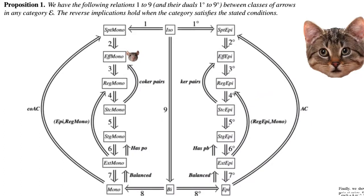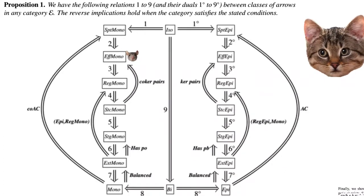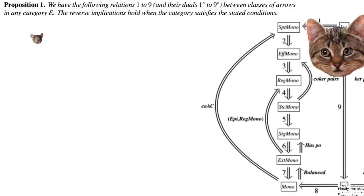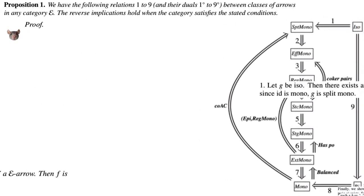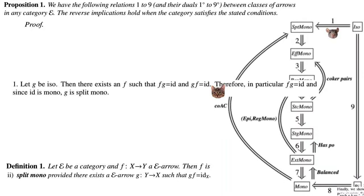Let's prove these — each piece is simple but illuminates the interrelations. For (1): let G be an isomorphism. Then there exists F such that FG = id and GF = id. In particular FG = id, and since the identity is mono, G must be a split mono.